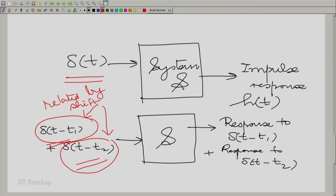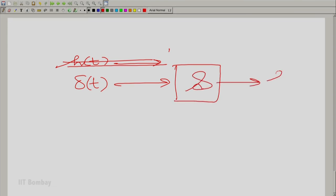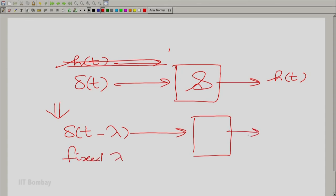So let us write that down formally. What we are saying is, h t resulting from delta t means delta t minus lambda for a fixed lambda should result in h of t minus lambda. So here I am bringing in shift invariance. We brought in these three properties and now we are going to synthesize them.